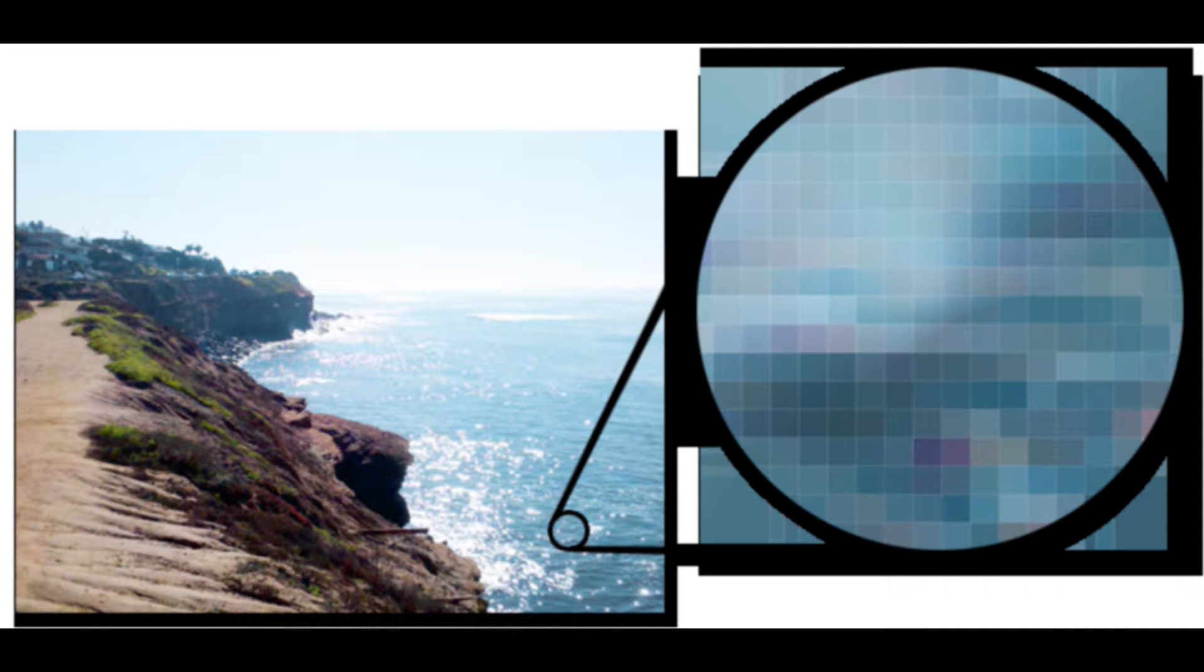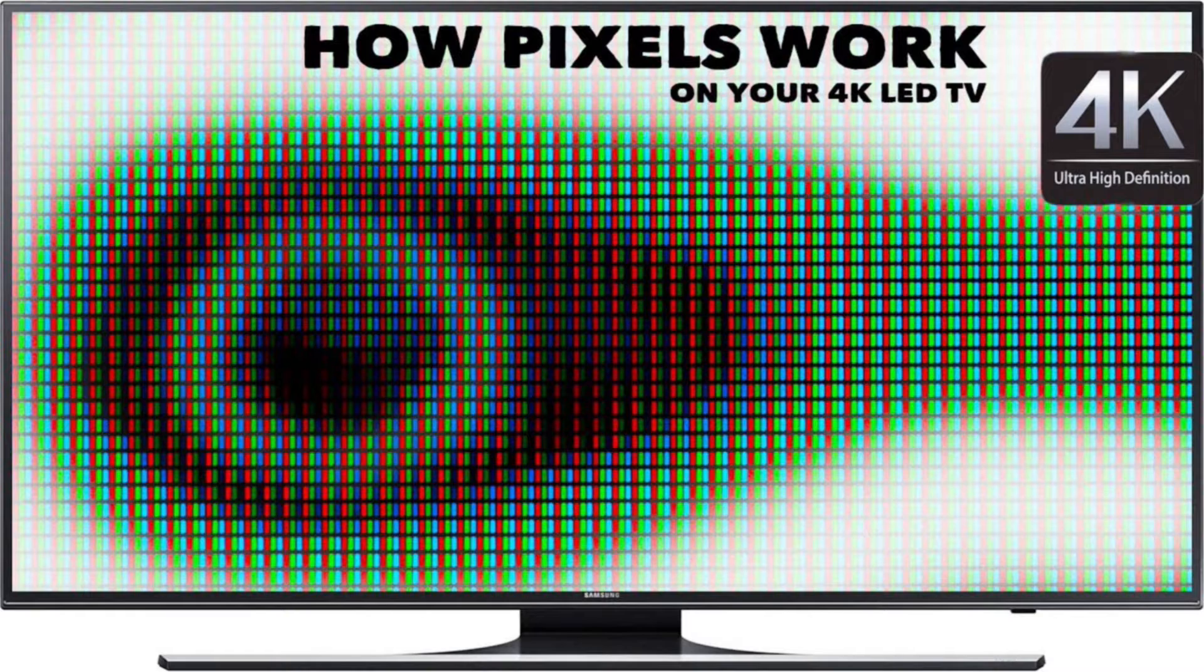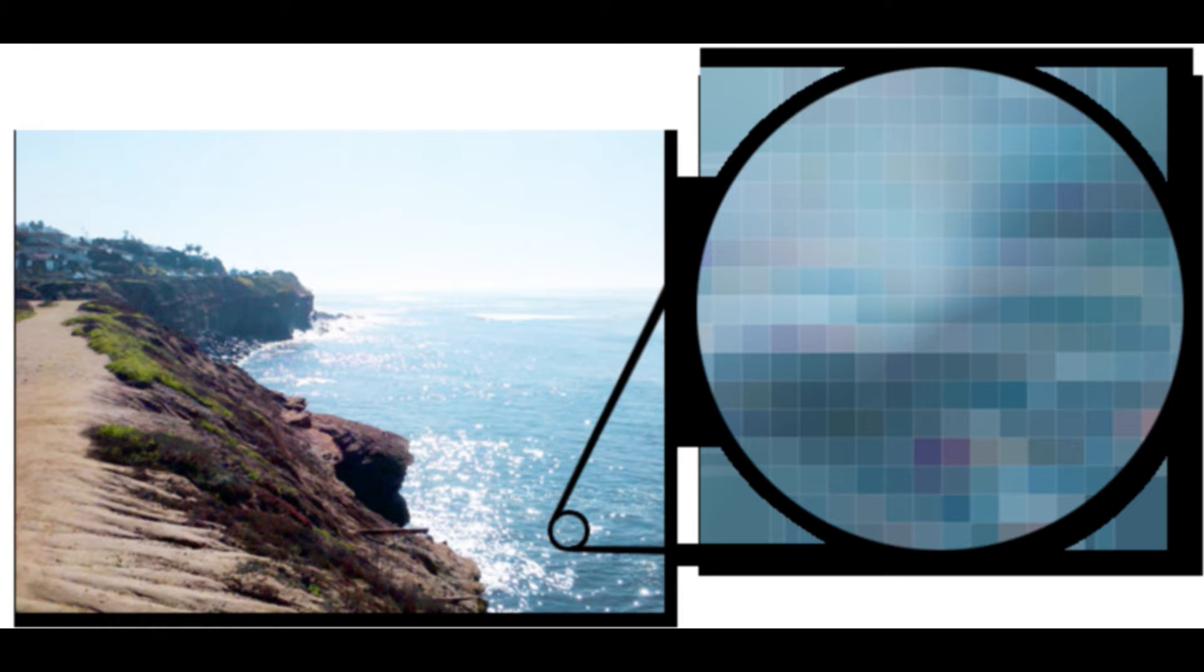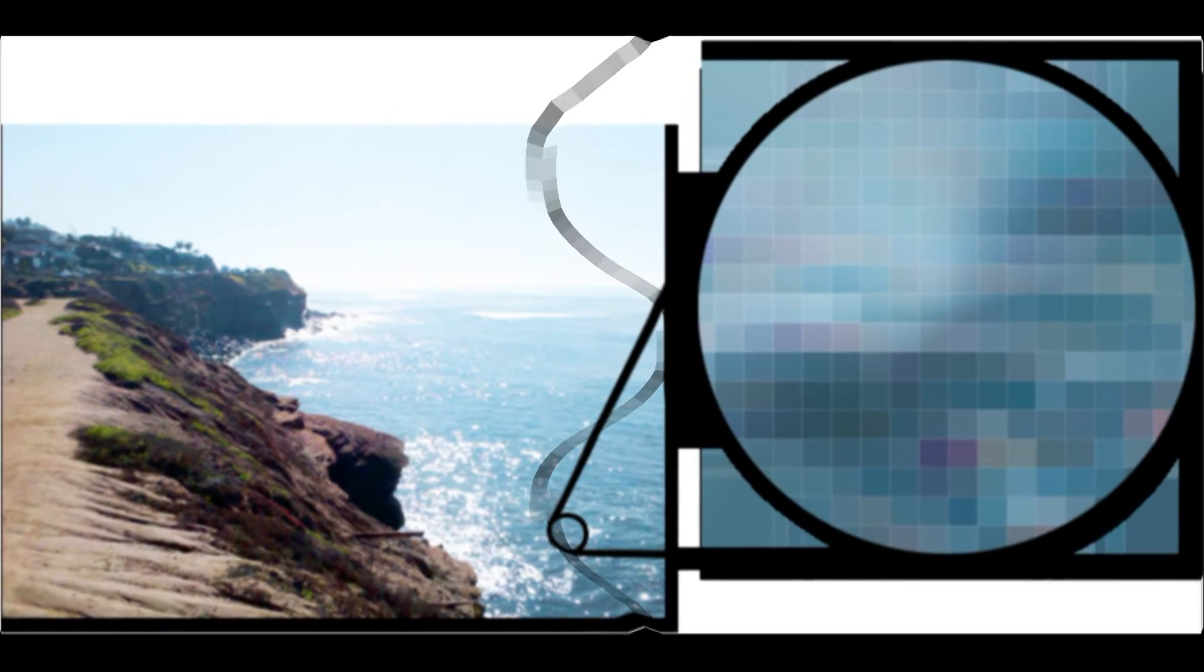Using one liquid crystal per pixel, each pixel can be made to allow or block light. Thus an image can easily be created using an active matrix technique. Basically, tiny switching transistors arranged in a matrix rapidly switch the LCD's pixels on and off.